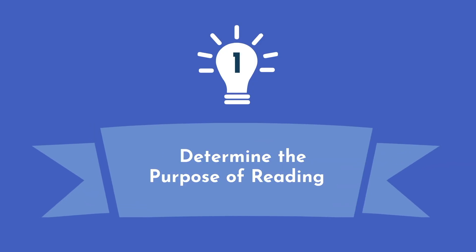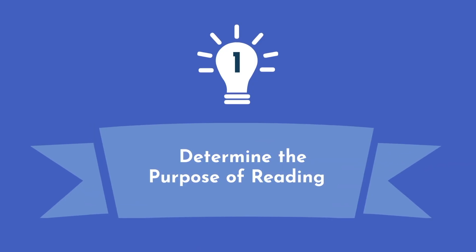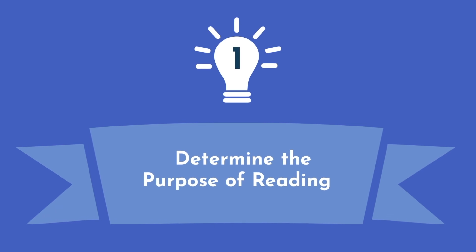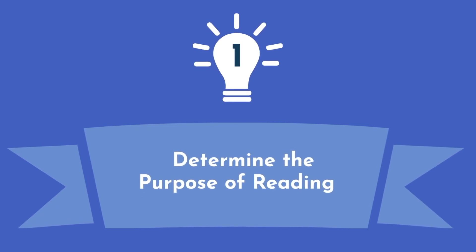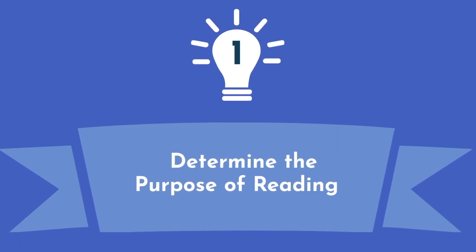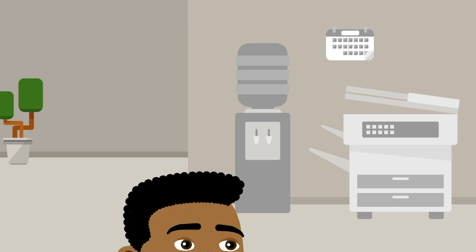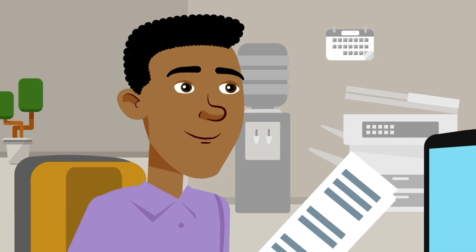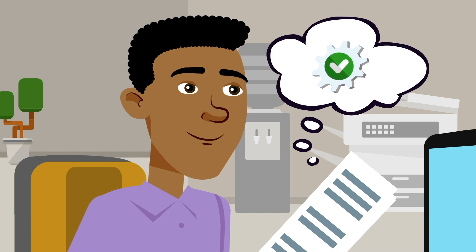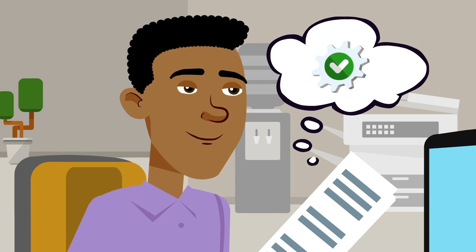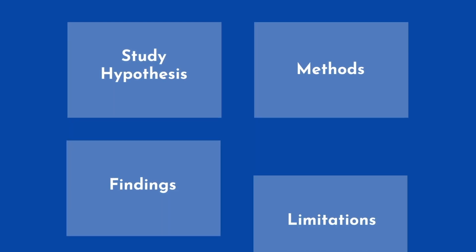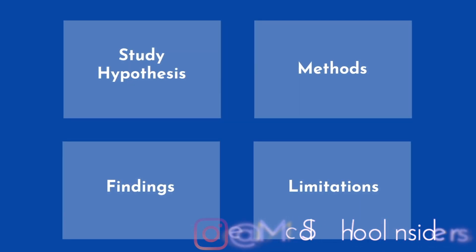First, determine the purpose of reading. Depending on the purpose and your goal in reading a research paper, your approach may differ considerably. Keep that in mind as we cover the following sections. If you're reading a paper as a requirement for class, like I initially had to for my neuroscience courses, you will be focusing on comprehension rather than on determining utility. You'll need to know the study hypothesis, the methods they used, the findings, and the limitations of their conclusions.